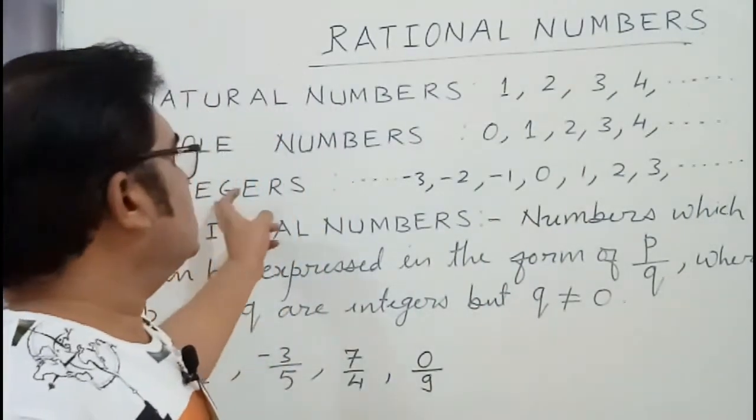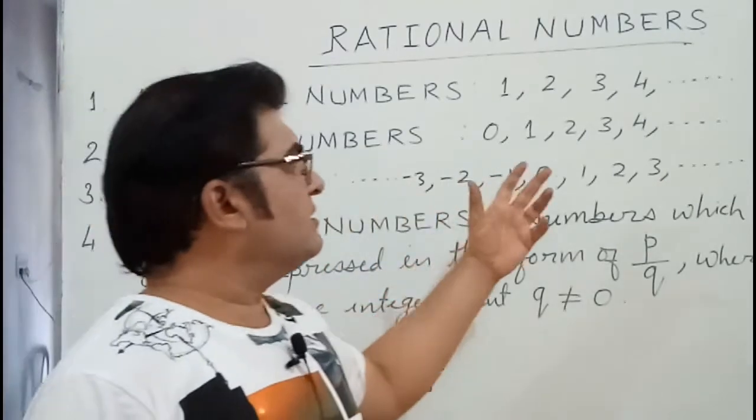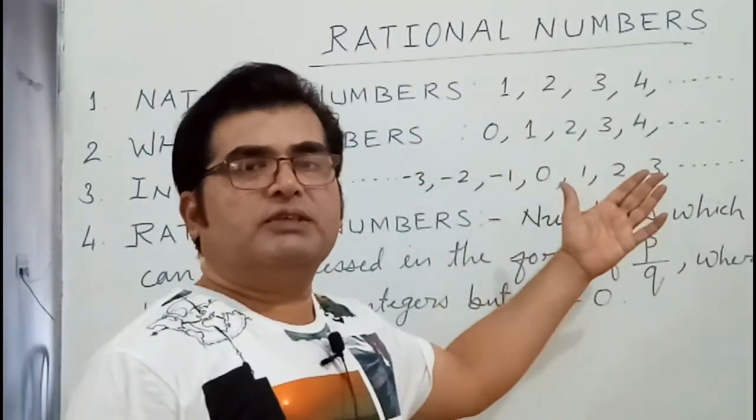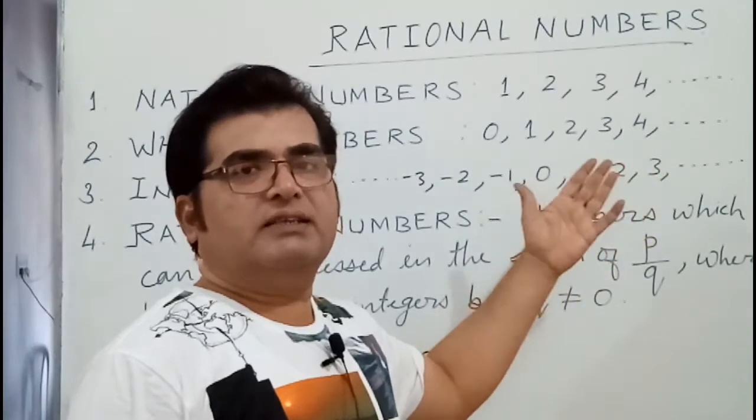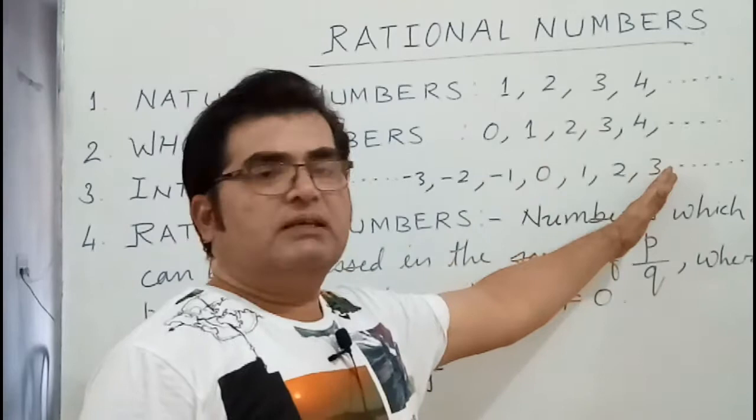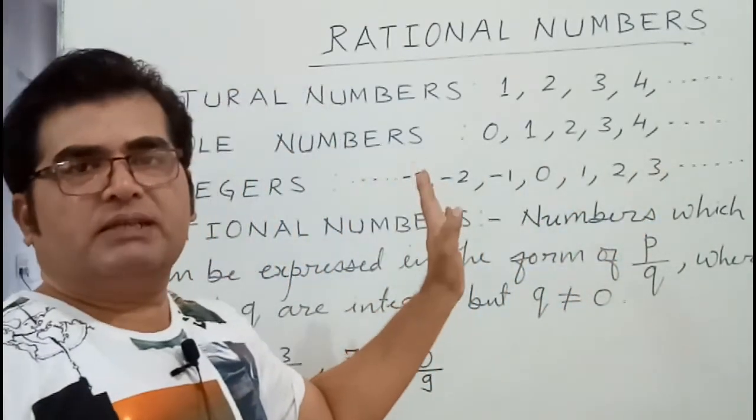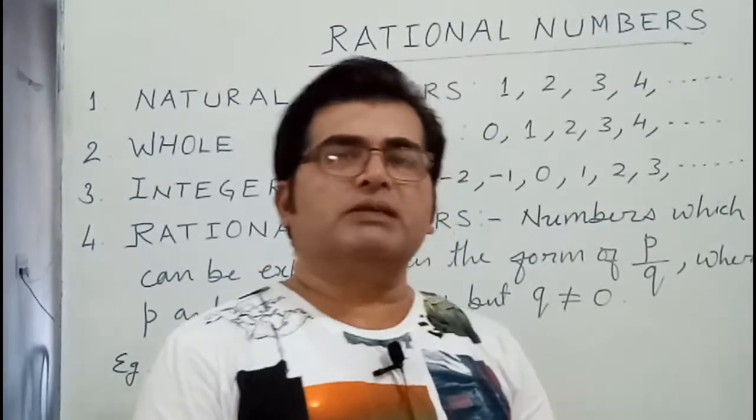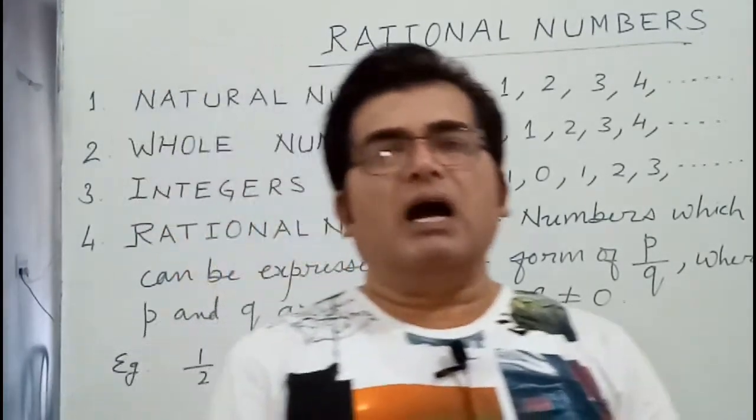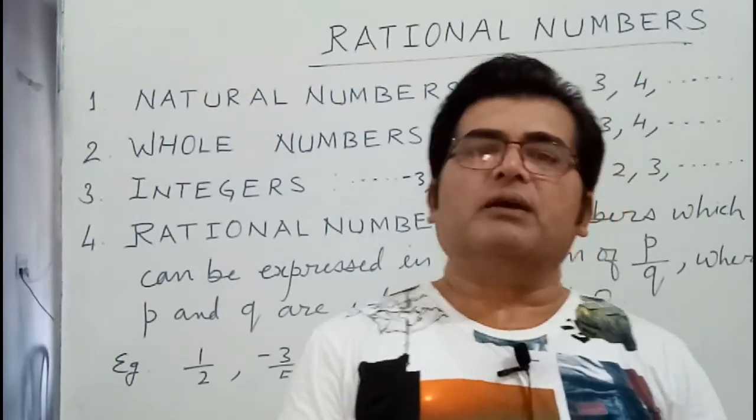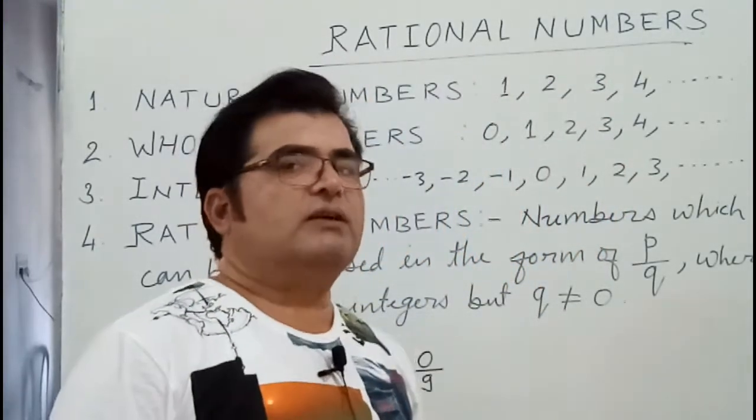Then integers. Integers are all the negative numbers, 0, and all the positive numbers. Or you can say all the whole numbers including negative numbers are called integers. So all the positive numbers, all the negative numbers, and 0 are called integers. Then we come to rational numbers.